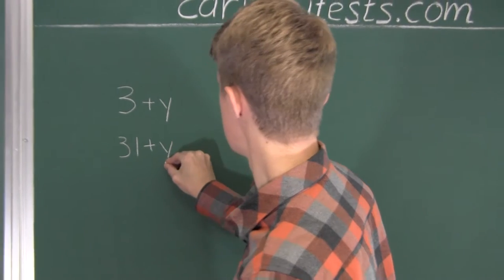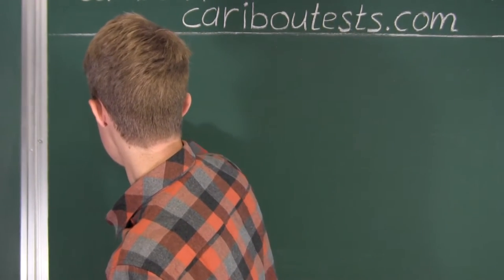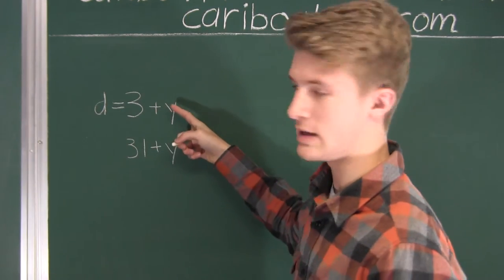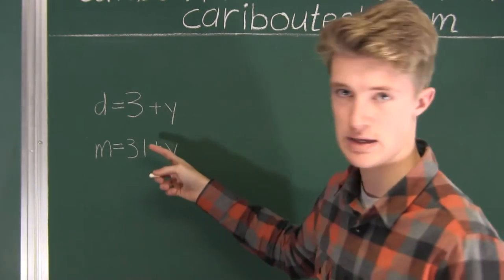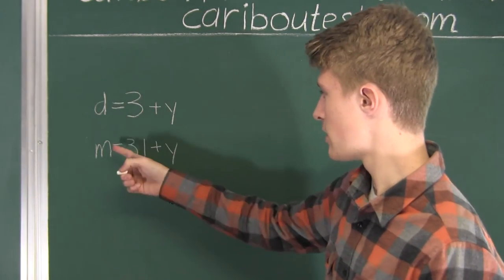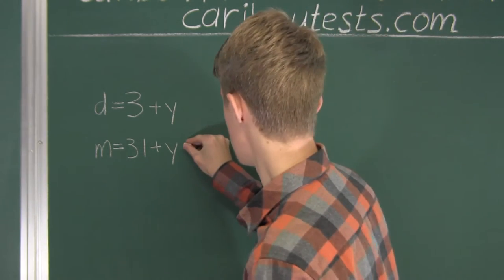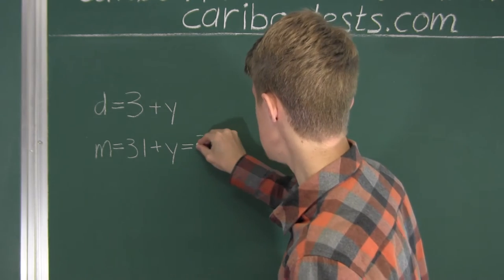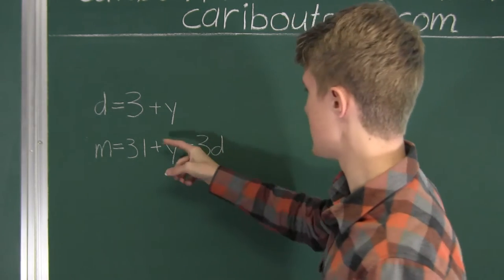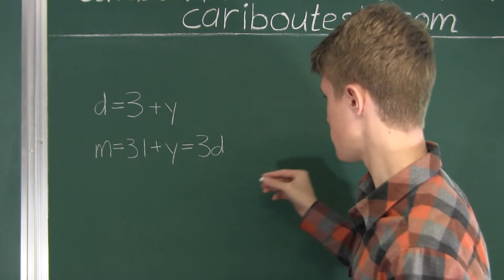Okay, so this is the daughter's age in however many years that is, and this is the mother's age for the mother to be 3 times as old as the daughter. We know that M must equal 3D, because we know that in that time she will be 3 times as old as the daughter. So that's equal to 3D.